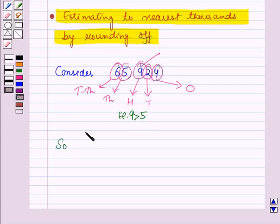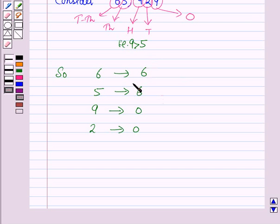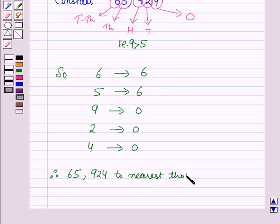Since 9 is greater than 5, the digit at the ten-thousands place will remain as it is, and the digit at the thousands place will be increased by 1, so it becomes 5 plus 1 equals 6. The digit at the hundreds place, 9, will be changed to 0, and the digit at the tens place, 2, will also be changed to 0. Therefore, on rounding off 65924 to the nearest thousands we get 66000.